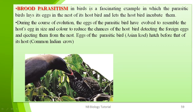Brood parasitism is mostly observed in birds. In this fascinating example, the parasite bird lays its eggs in the nest of a host bird — such as a crow — and lets the host bird incubate the eggs. During the course of evolution, the eggs of the parasitic bird have evolved to resemble the host's eggs in size and color, to reduce the chance of the host detecting the foreign egg and rejecting it. The Asian koel's egg hatches before that of its host, the Indian crow.